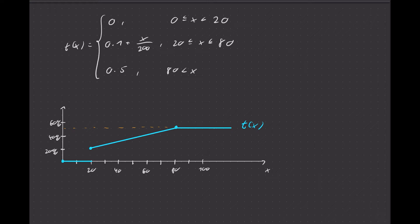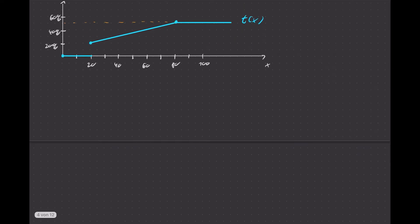Now of course the question is, how much tax do we have to pay for a given income? How do we compute that? What is the total tax, let's call that capital T of x, paid on an income of x? Let's start with a simple example. Let's first assume that x is 60, so we earn 60,000 euros a year. How much tax do we have to pay in that case, in total?